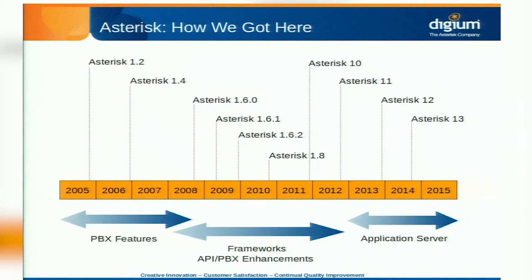Although the Asterisk project began in 1999, I don't have anything before 2005. That's partially because the commit logs tend to turn into one-liners as Mark Spencer just merged from FTP on every single commit. Starting with Asterisk 1.2 through the 1.4 timeframe, the project was very heavily focused on adding a lot of the PBX features we all take for granted today — dial plan functions and original APIs — really building out Asterisk as that Swiss army knife of communications.